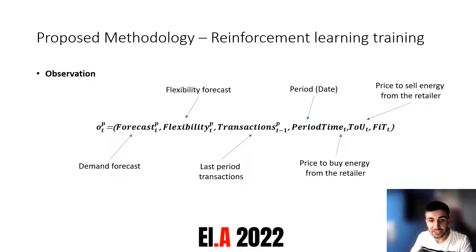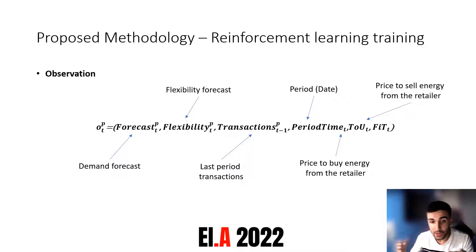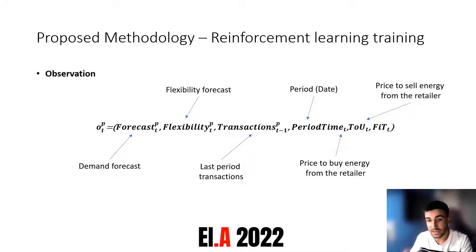The observation for each agent in each period is composed as follows: we have the demand forecast for the market period as well as the flexibility forecast; we have the last period's transactions just from that player, so we don't need to know the other transactions that happened in the market; we have access to the date and period time; and we have access to the two prices to buy or sell energy from the retailer — the time-of-use tariff or the feed-in tariff.